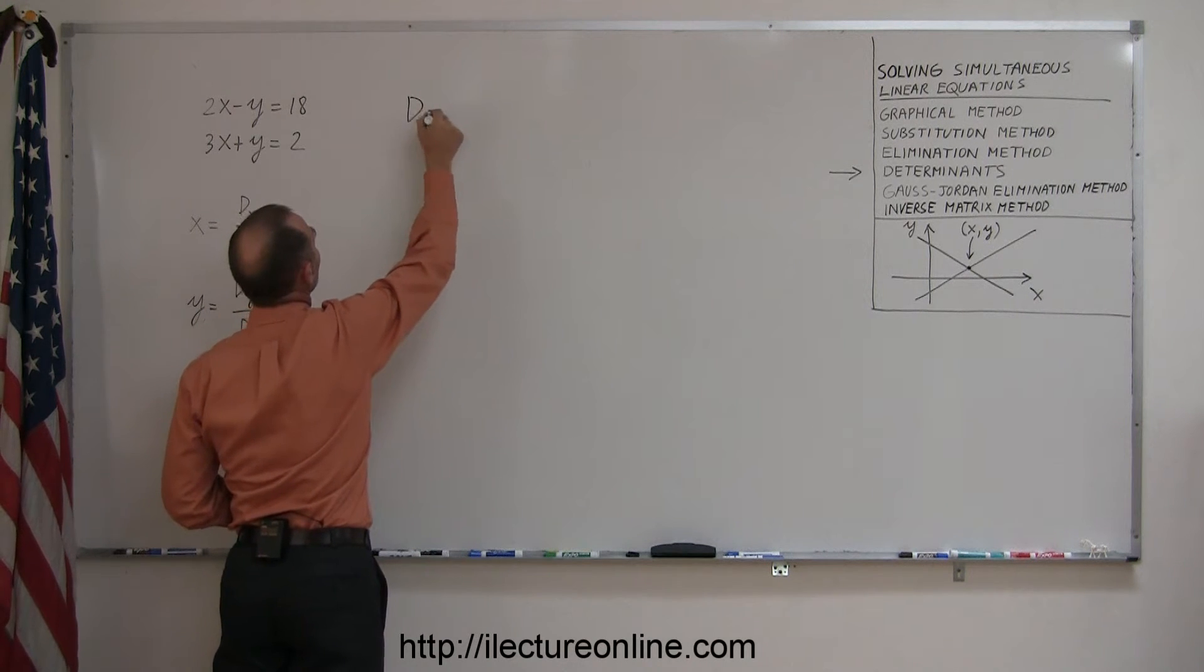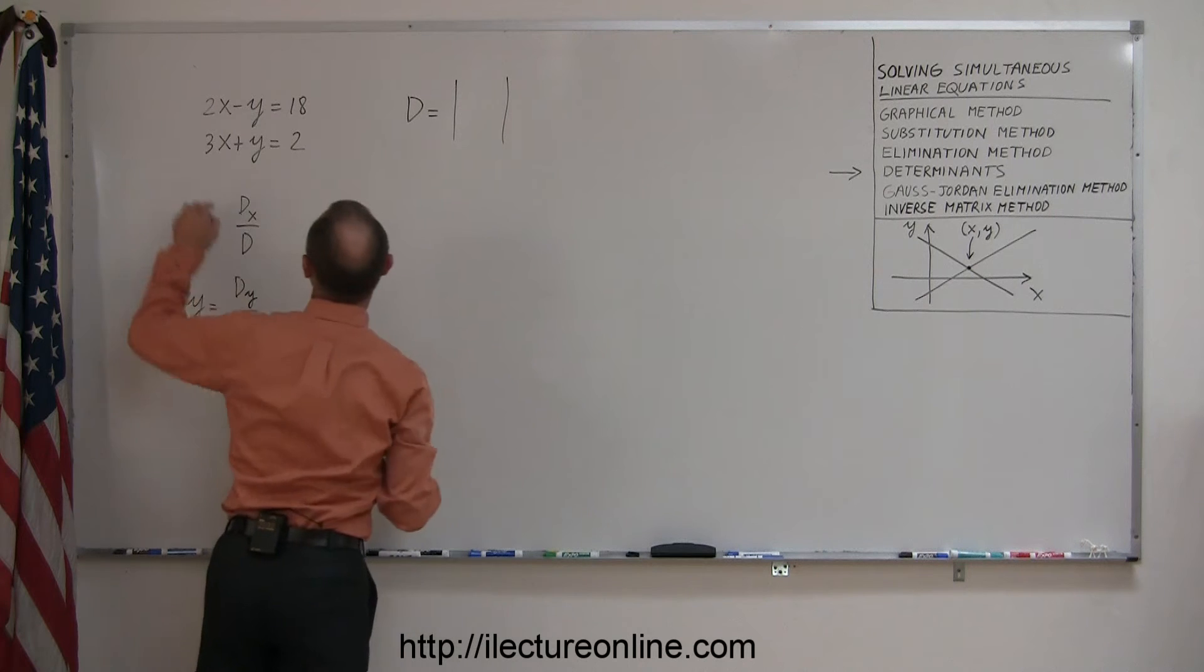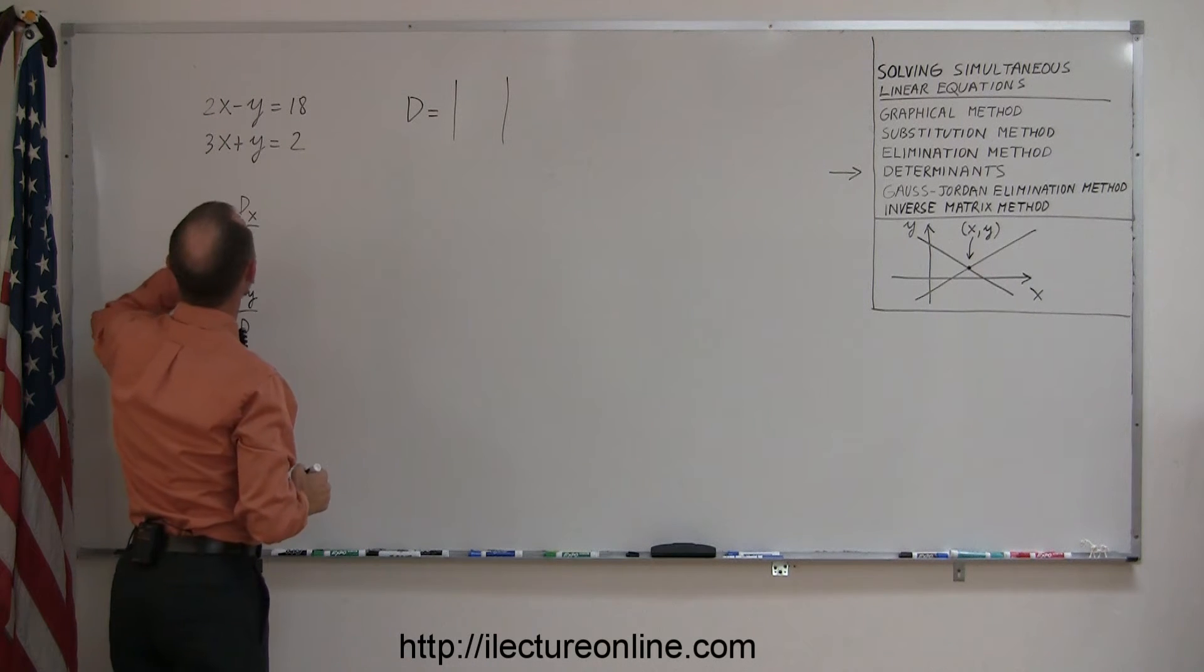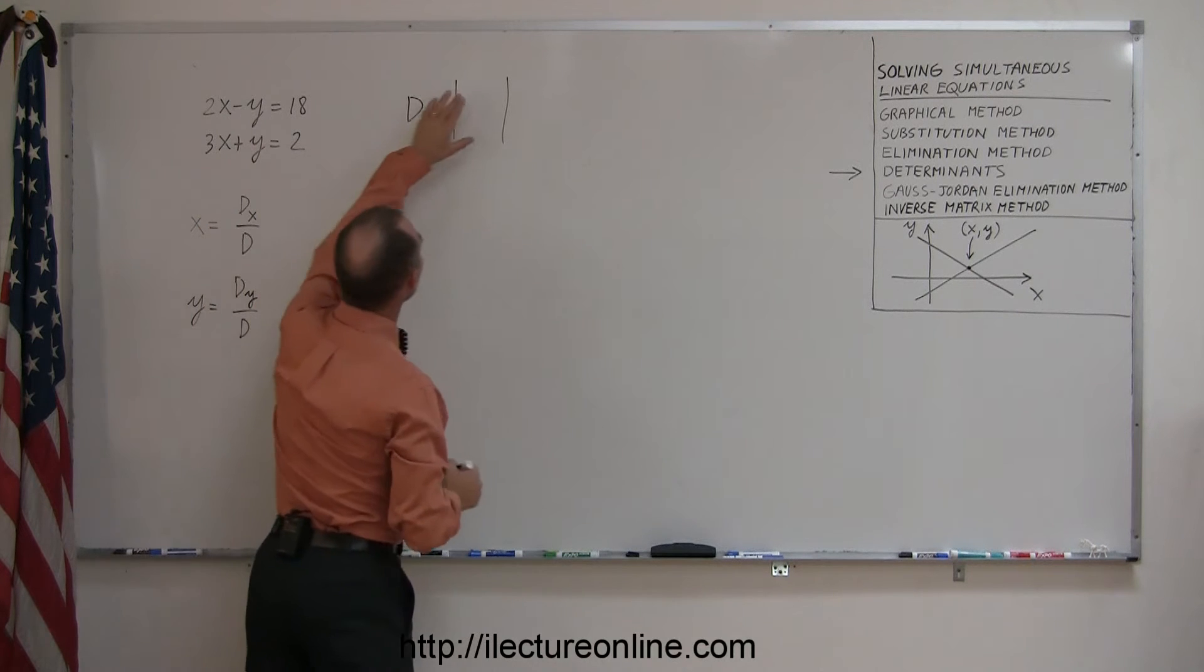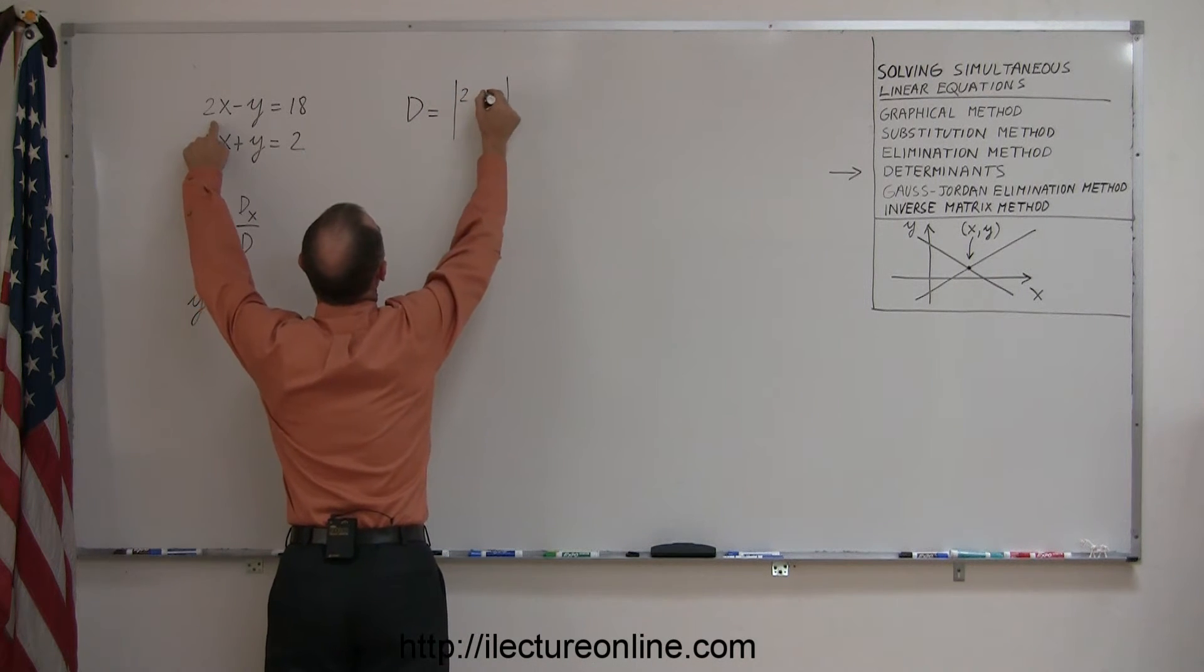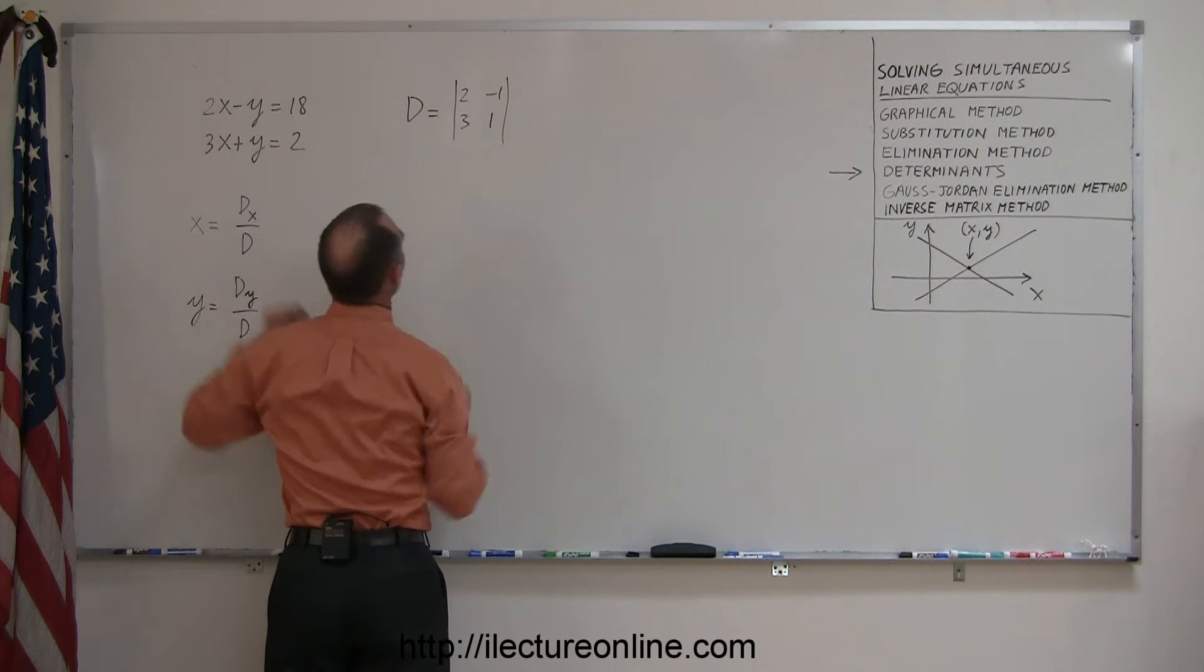So the determinant can be found by taking the coefficients of the x and y variables and place them inside this determinant. So we have a 2, we have a minus 1, we have a 3 and a 1.